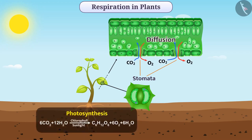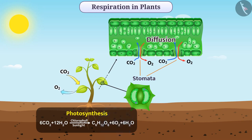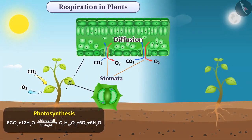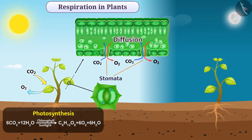Photosynthesis occurs during the day, so carbon dioxide produced in cells during respiration is used in photosynthesis, and oxygen is released from cells during the day. At night, photosynthesis does not occur, so carbon dioxide is released from the cells of plants.